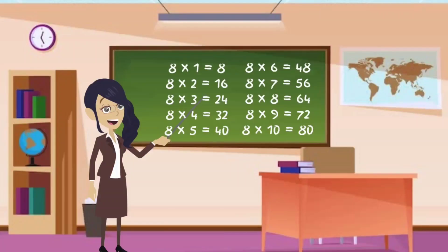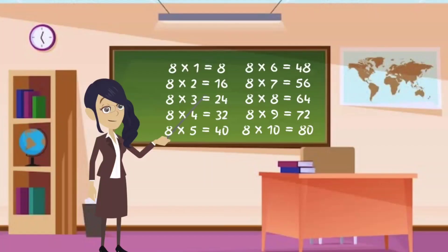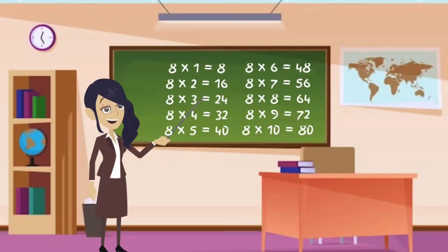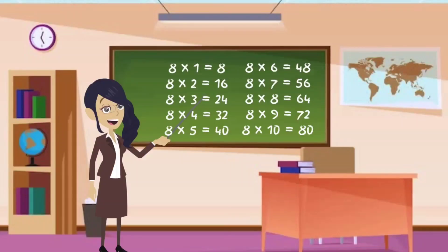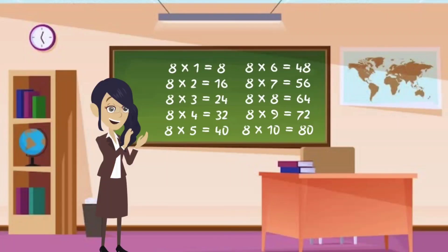8 7s are 56. 8 8s are 64. 8 9s are 72. 8 10s are 80. Very good, you did it!